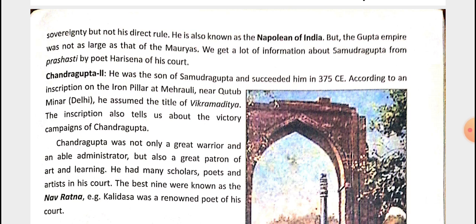Chandragupta II was the son of Samudragupta and succeeded him in 375 CE. According to an inscription on the iron pillar at Mehrauli near Qutub Minar in Delhi, he assumed the title of Vikramaditya.